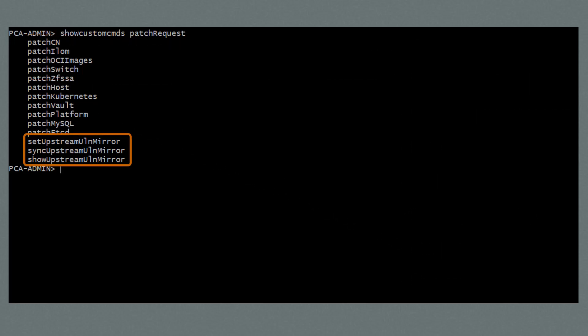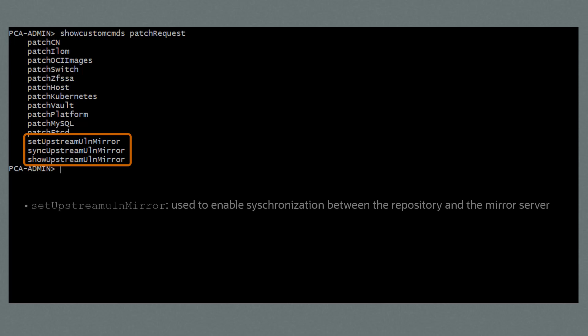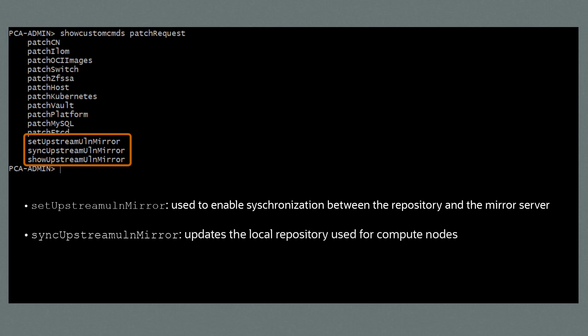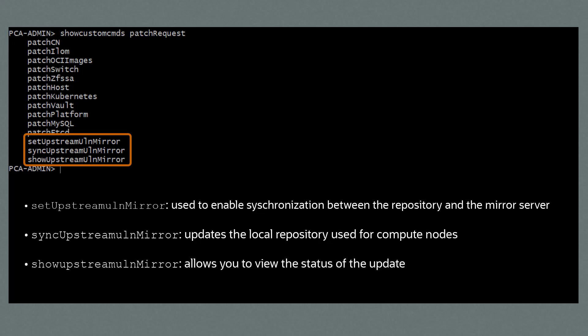You'll also notice some ULN mirror commands. The setup stream ULN mirror is used to enable synchronization between the repository and the mirror server. After you have updated the local mirror server, the sync upstream ULN mirror command updates the local repository used for compute node patches. And the show upstream ULN mirror command allows you to view the status of the update.